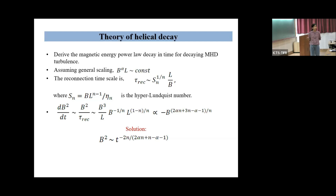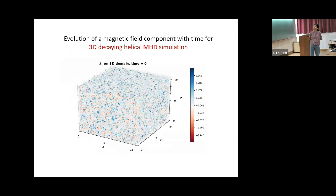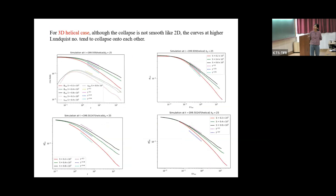Question: You said that in non-helical decaying turbulence, helicity is not conserved. Answer: In a non-helical decaying turbulence system, helicity is quite small and that is why we cannot take it as a constraint. It's not that it's not conserved — it remains almost zero — so it's not a constraint on the system's evolution.